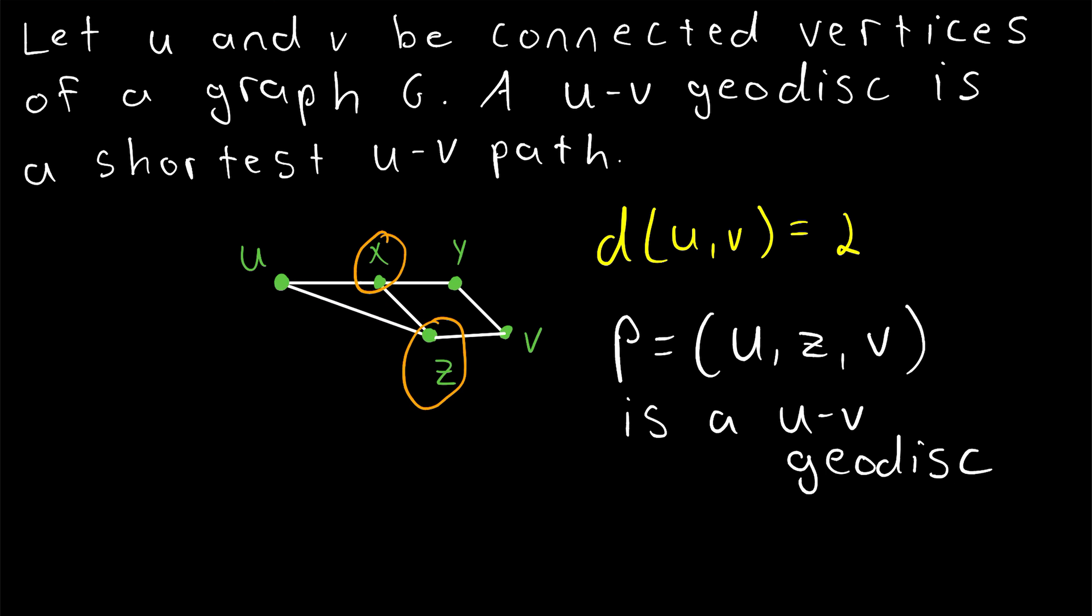For one more example, look at x and z. One path connecting x and z goes from x to y, from y to v, and then from v to z. And that is a path of length 3. But that is not a shortest path connecting x and z. Since x and z are adjacent, we can get from x to z in a path of length 1. So we could say P, we'll say just P prime, is equal to the path going from x straight to z. This is a shortest x-z path in the graph, and so it is, by definition, an x-z geodisc.